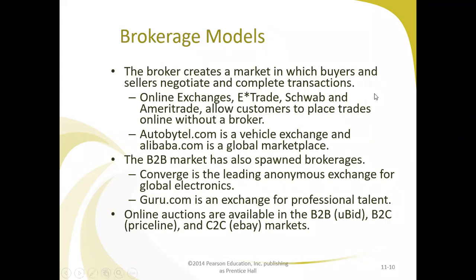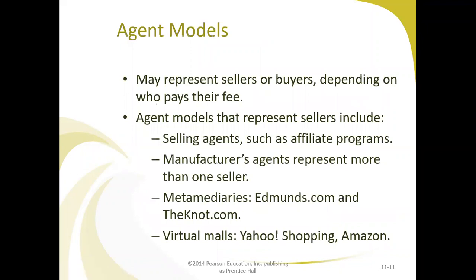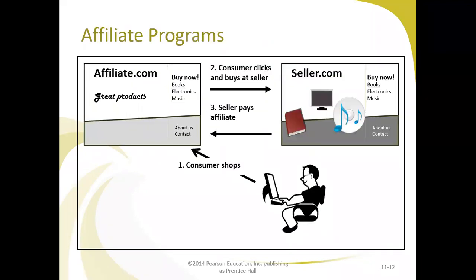To summarize the intermediary models: brokerage model, agent model, and online retailing. The affiliate program works like this — an affiliate site presents products such as books, electronics, and music. The consumer shops at the affiliate site and clicks through to buy at the seller's site. The seller then pays the affiliate a commission, because the customer originated from that affiliate.